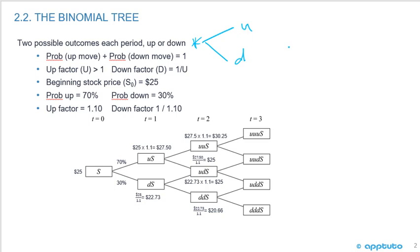The probability of the up move plus the probability of the down move equals 100%. In this example, the probability of moving up is 70%, so P equals 70%. The probability of down is 1 minus P, which equals 1 minus 0.7, giving us 30%.